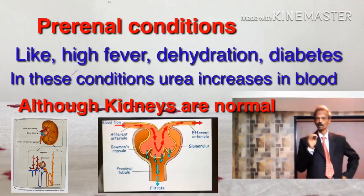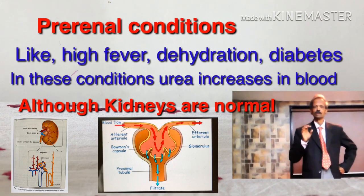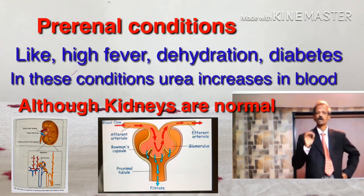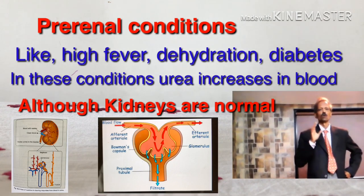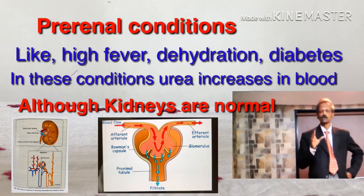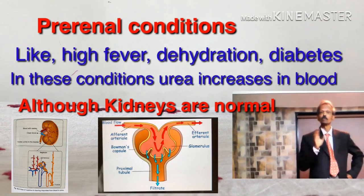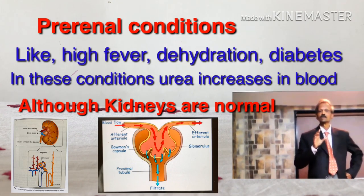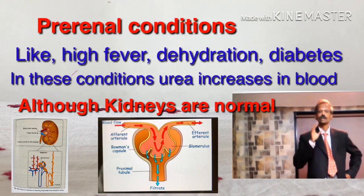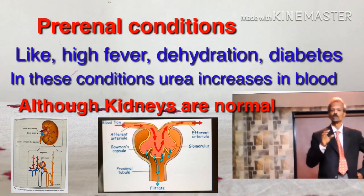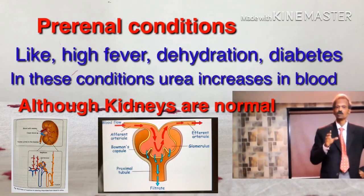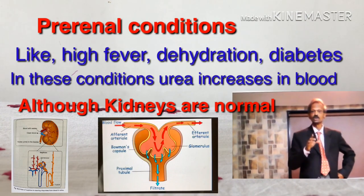The next question is: what is the pre-renal condition? The answer is, pre-renal conditions include high fever, dehydration, diabetes mellitus, etc., in which urea rises, and kidney functions are very much normal with no obstruction to the flow and excretion of urine.